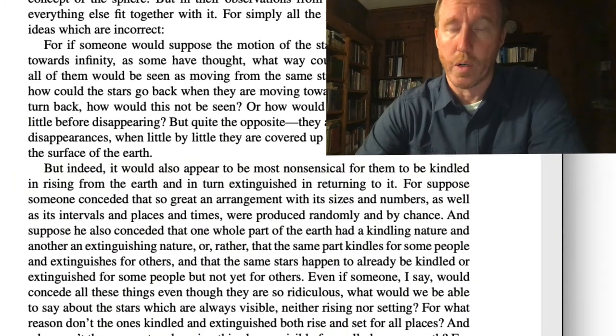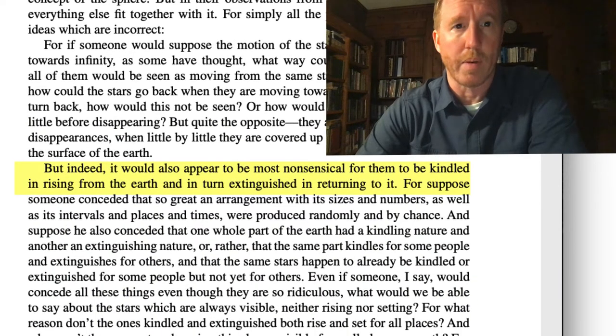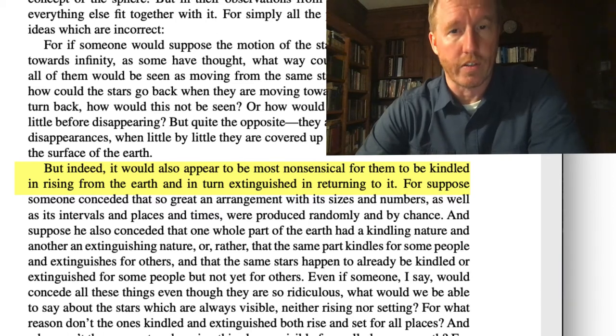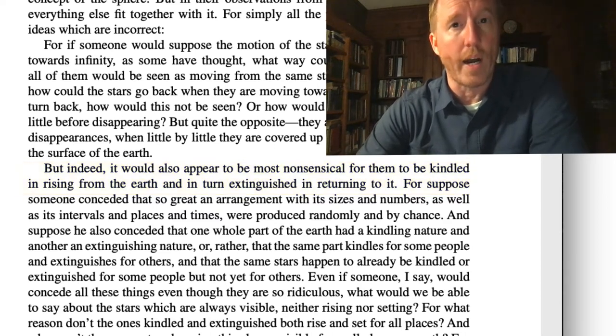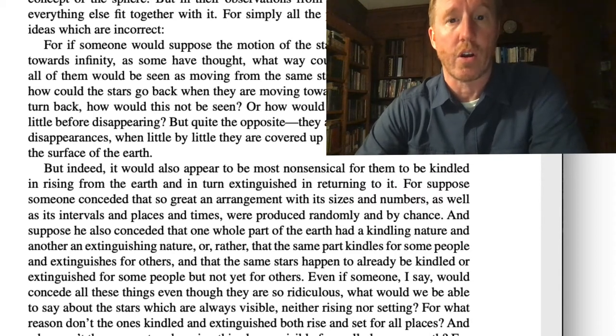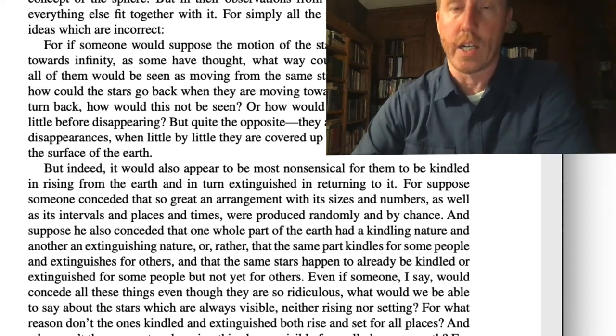He also considers another model where apparently some believe that these stars were kindled, so to speak, in the east. You might think about a mountain chain off across the ocean in the east that shoots out these fiery stars each night. They travel overhead and then they're extinguished, he says, in the west as they perhaps fall into the ocean. Now, of course, Ptolemy rejects this idea, but why does he reject it? He does not reject it out of hand. Rather, he provides an argument. He says that it wouldn't make sense because it would be too coincidental for these stars that are kindled in the east and extinguished in the west to adopt the exact same configurations night after night after night.